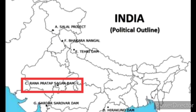Next is Rana Pratap Sagar Dam. Rana Pratap Sagar Dam is built on the Chambal river at Rawat Bhata in Rajasthan.